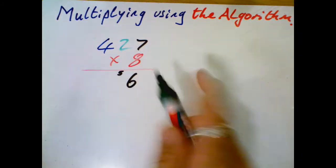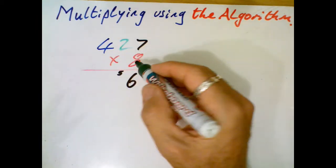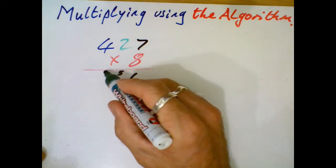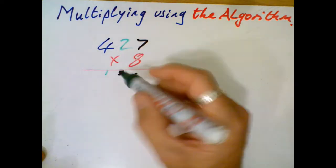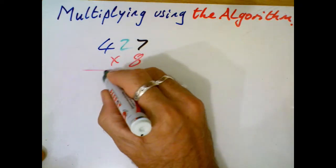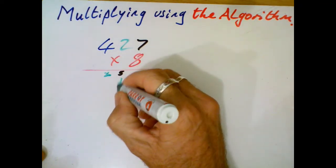Then I'm dealing with the tens. 2 times 8, 16. Plus I've got this 5 here. So that's going to be 1 in this column. 16, sorry, it's going to be 2, isn't it? 21. 2 and 1 there. My green's not working.